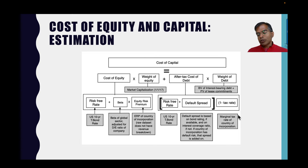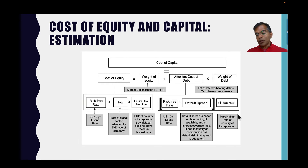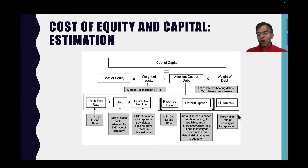For the cost of debt, I add a default spread. If the company has a bond rating from S&P — my data comes from S&P Capital IQ — I estimate a default spread based on that rating. So a triple-A rating gets the triple-A default spread, triple-B gets the triple-B spread. If your company is not rated, I estimate a default spread based on your interest coverage ratio, so I come up with a default spread that reflects your risk either from an actual bond rating or an interest coverage ratio.